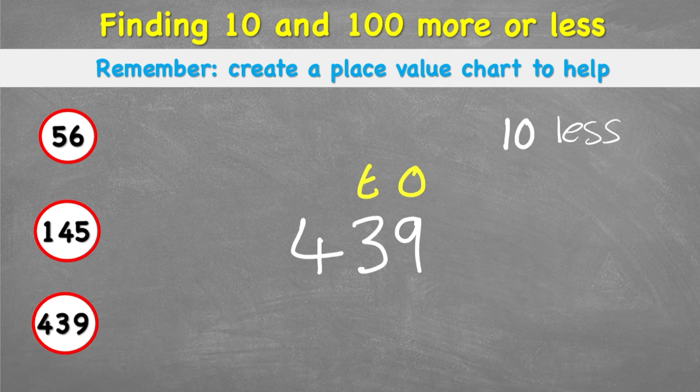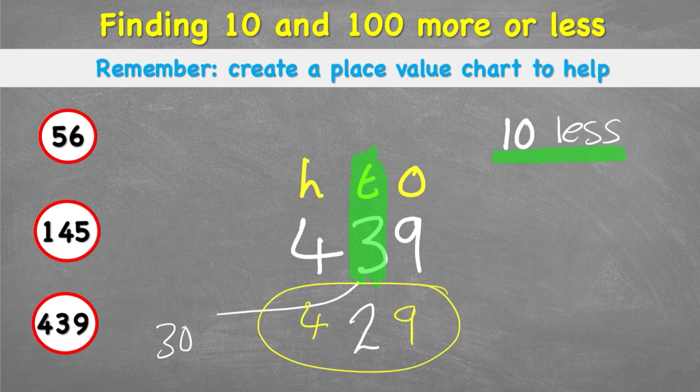But also help us remember which column we're going to be working on. And if we're working on 10 less, I'm going to be in my tens column. And at the moment I have 3 tens, or in other words, 30. So what is 10 less than 30? Well, it's 20, or 2 tens. I bring down my 4 and I bring down my 9, leaving me an answer of 429. So 10 less than 439 is 429.